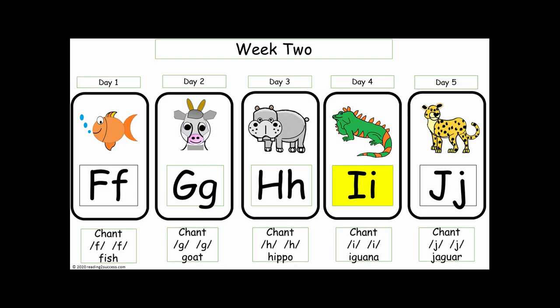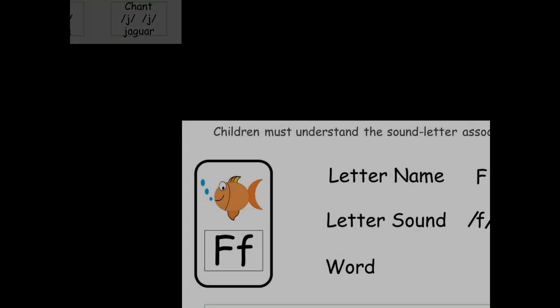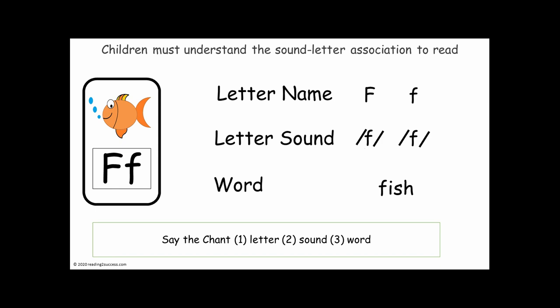Week 2 of Sound Letter Teaching Cards will focus on the letters and sounds of F through J. Explain to kids that we are seeing a picture of a fish because fish starts with the letter F and makes the F sound. Together with kids, do the chant: F, F, F, Fish.